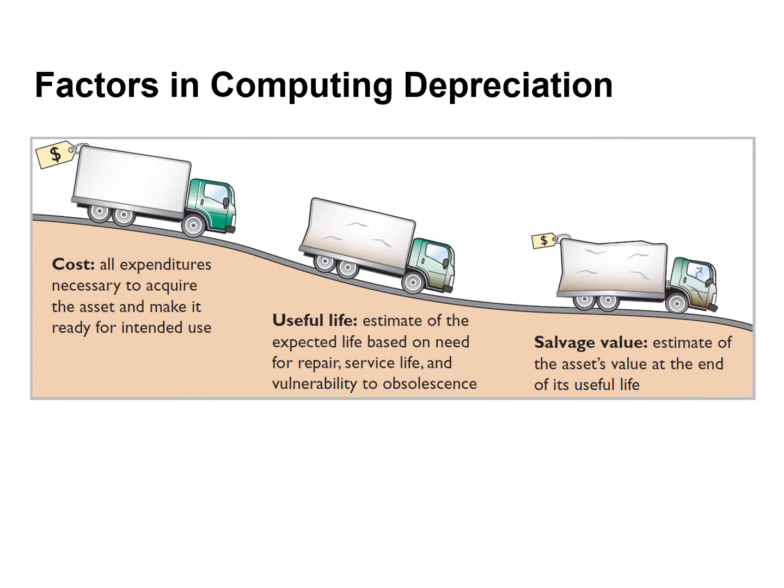Depreciation of a plant asset is based on three main factors. The first one is cost. Plant assets are recorded at cost in accordance with the cost principle. The second one is useful life, which is an estimate of the expected productive life, also referred to as the service life. Useful life may be expressed in terms of time, units of activity such as machine hours, or units of output.